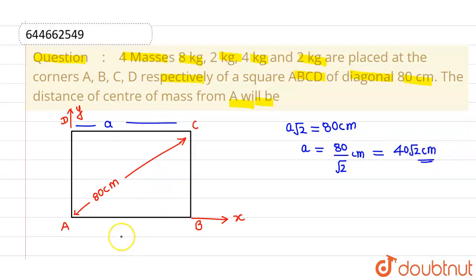This is the side length. So the coordinates of A, B, C, D where A is 8 kg, at B we have placed a mass of 2 kg, at C we have placed a mass of 4 kg, and at D we have placed a mass of 2 kg. So the coordinates will be (0,0) for A, for B the coordinates will be (40√2, 0), for D the coordinates will be (0, 40√2), and for C the coordinates will be (40√2, 40√2).